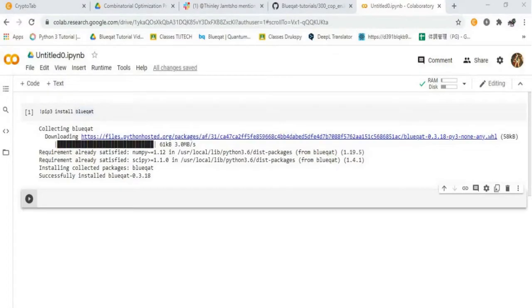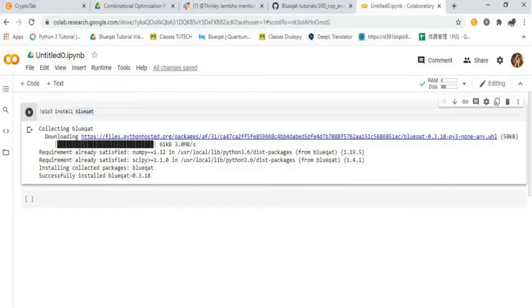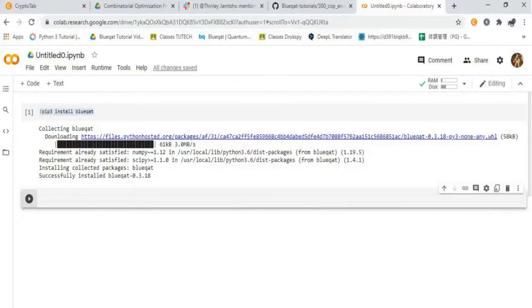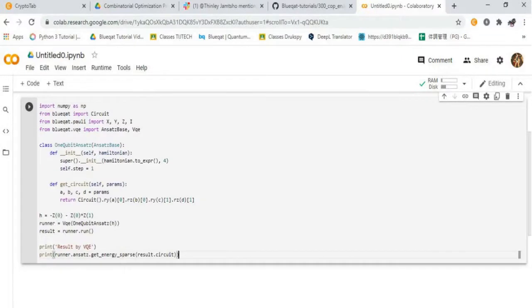Now we check it on BlueCat. First we need to install BlueCat and run this code. Type the codes, firstly import the libraries, then defining a class for the 1 qubit ansets. The first method is used for initializing the Hamiltonian. Then the second method is used to get the circuit by using the parameters.